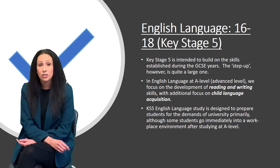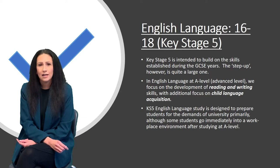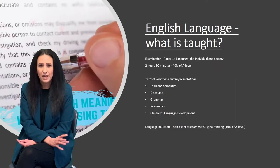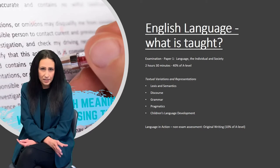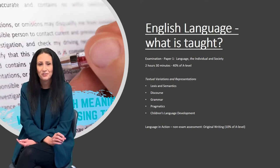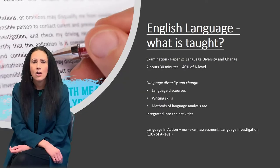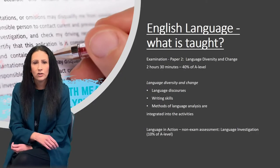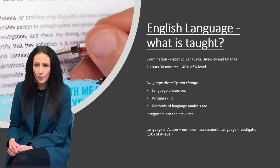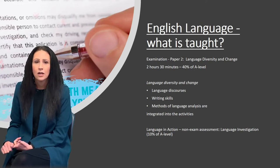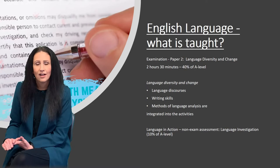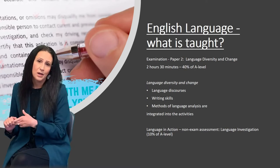For English Literature, we have two papers again. We look at all kinds of critical perspectives — eco-critical, psychoanalytic criticism, feminist criticism — looking at texts through various lenses and really trying to think about different ways of reading and interpreting a variety of texts. For that we look at Twelfth Night, poetry by William Blake, The Kite Runner, as well as the critical anthologies.